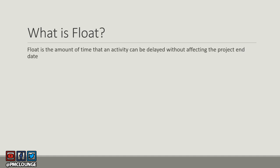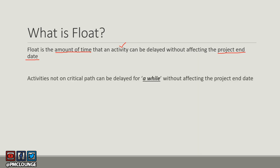So what is float? A quick definition: float is the amount of time that an activity can be delayed without affecting the end date of the project. This means an activity may not be urgent — it can actually be delayed and your project will still meet its deadlines.